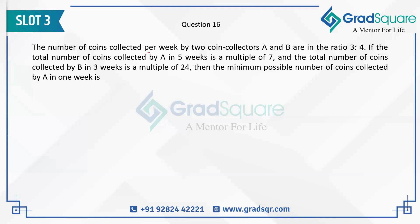The number of coins collected per week by two coin collectors A and B are in the ratio 3 to 4. So I'm saying 3x is the number of coins collected by A in a week, and 4x is the number of coins collected by B in a week.